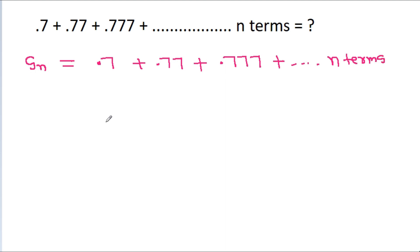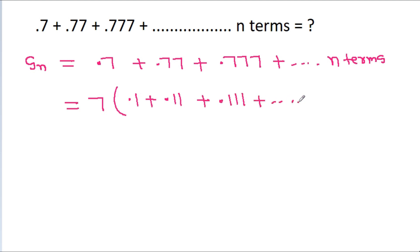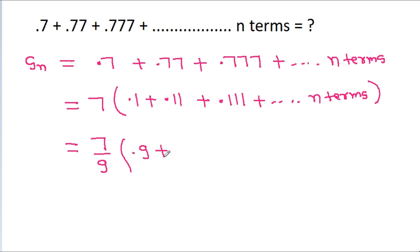then if we take 7 common, we will get 7 times (0.1 plus 0.11 plus 0.111 plus up to n terms). And if we multiply and divide by 9, then it is 7 by 9 times (0.9 plus 0.99 plus 0.999 plus up to n terms).